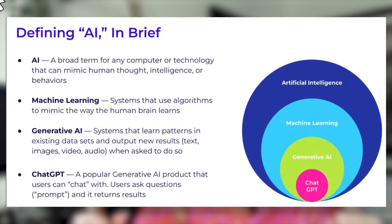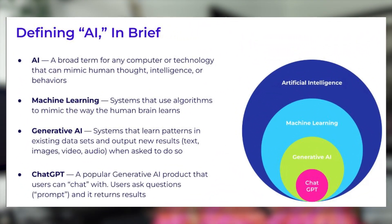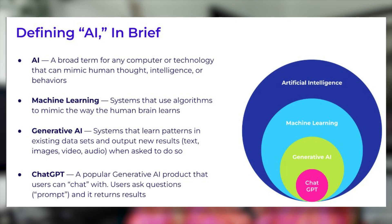I'll put it up on screen here. You can see AI is a broad term for computer or technology that can mimic human thought, intelligence, or behaviors. AI is very much an umbrella term — it doesn't mean a specific thing. Then we go into machine learning, which is systems that use algorithms to mimic the way human brains learn, starting to get a bit more niche and tangible.